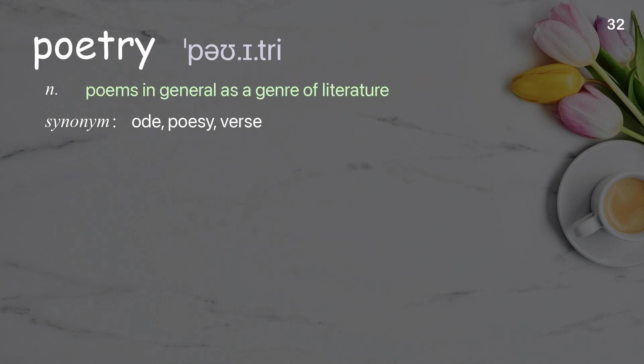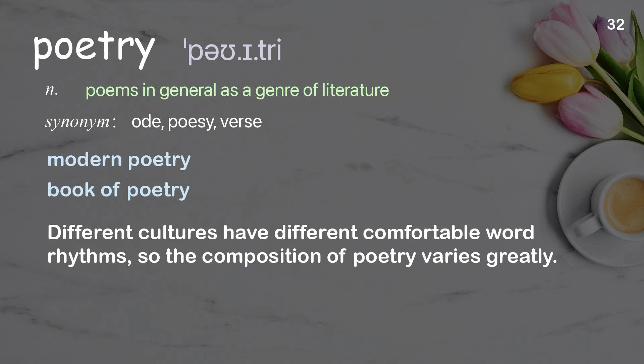Poetry — poems in general as a genre of literature. Examples: modern poetry, book of poetry. Different cultures have different comfortable word rhythms, so the composition of poetry varies greatly.